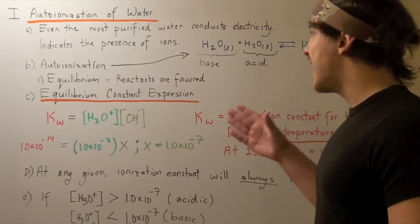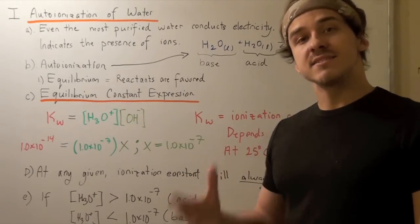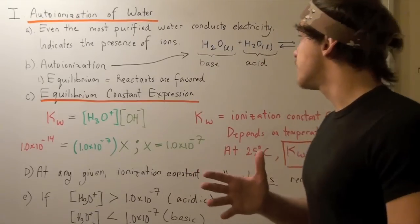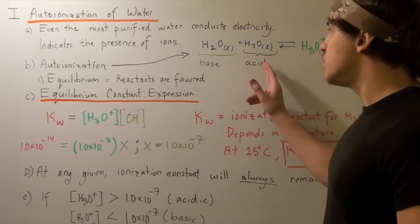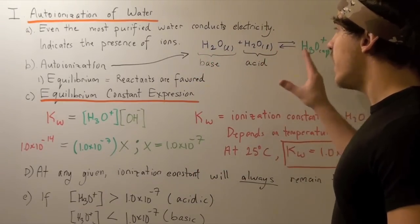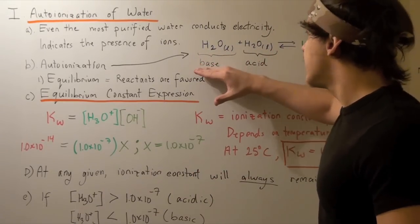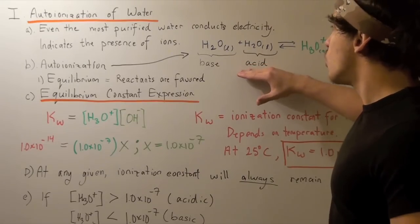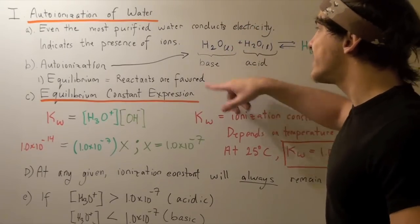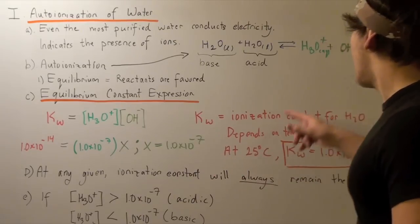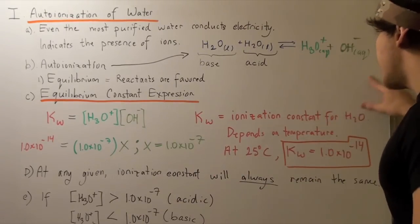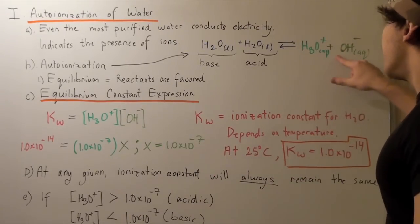Remember, water can act as both a base and an acid. So what actually happens is two water molecules interact in such a way that one acts as a base and one acts as an acid. One donates H and the other accepts the H, forming a conjugate acid and a conjugate base, namely hydronium and hydroxide.